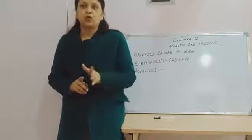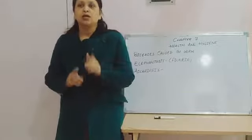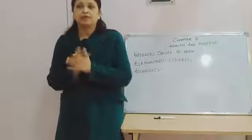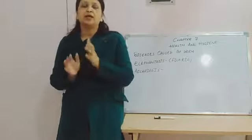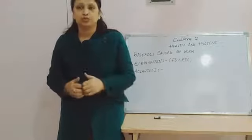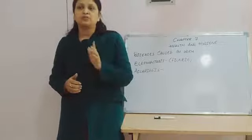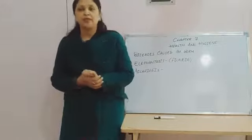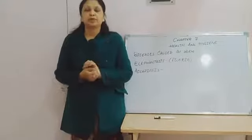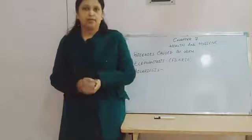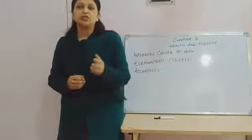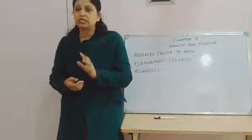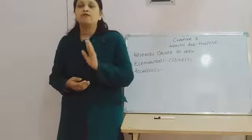The roundworm is a pale white, long-stranded, tube-like worm that lives in the intestine of humans. The roundworm is present in the feces of an infected person in the form of eggs. The eggs are transported from infected feces to a healthy individual by flies.